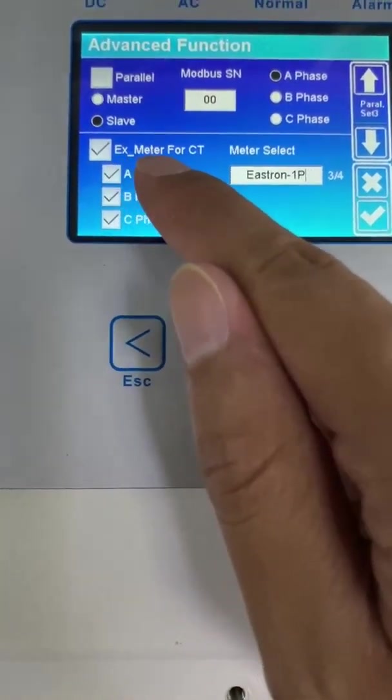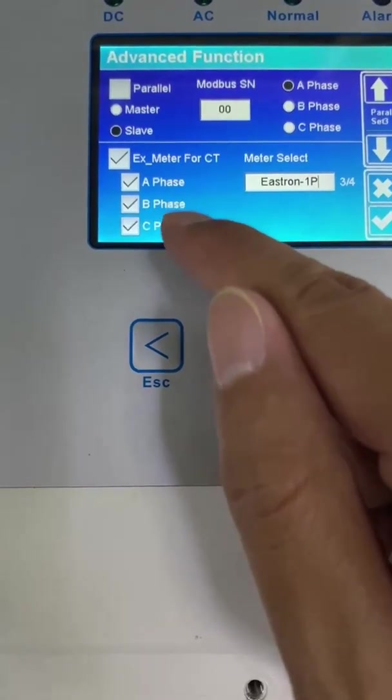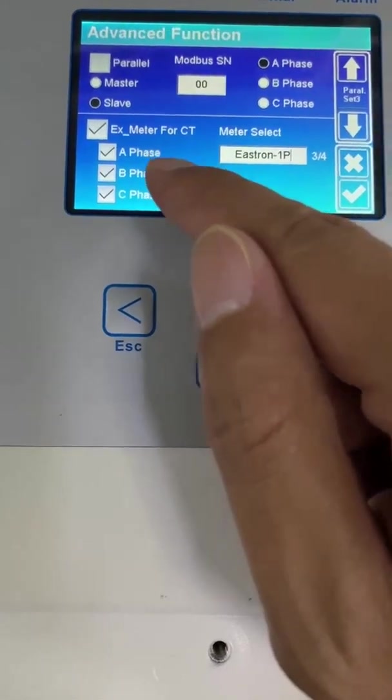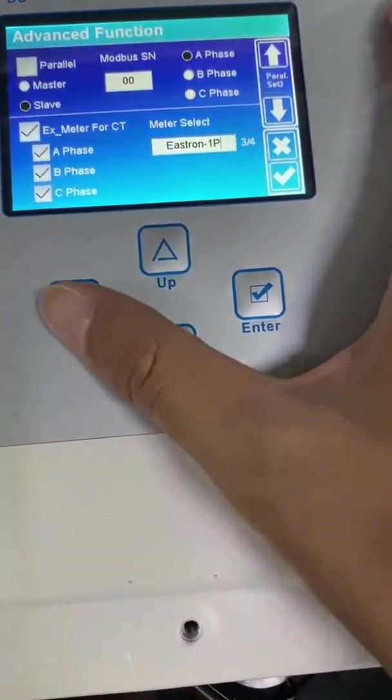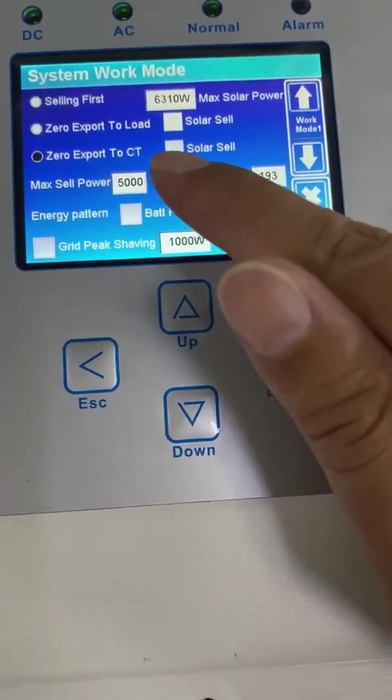And then we check here. The meter for CT. For this, you can choose all of them, or you just choose the one piece which is the meter connected. And also, we need to choose this model: Zero export to CT.